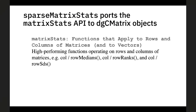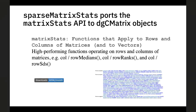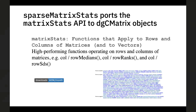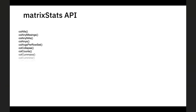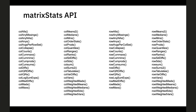Most of you will be familiar with matrixStats, but as a simple summary: this package provides lots of different summary functions that can be applied to the rows or columns of matrices. Henrik, the maintainer, has made sure that it's as efficient as it can be. It's a very popular package, with nearly 400,000 or more than 400,000 downloads every month, which probably also comes from the huge number of dependencies the package has — a lot of CRAN and Bioconductor packages import or reverse depend on matrixStats.